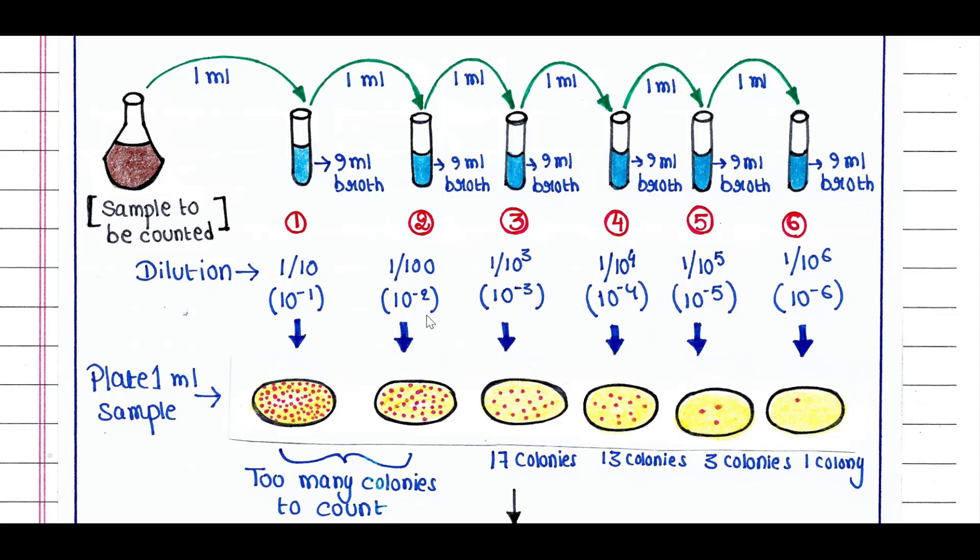Again, we will take 1 ml culture from tube 2 and put it in 9 ml broth in tube 3. That means the dilution is 10 to the power minus 3.